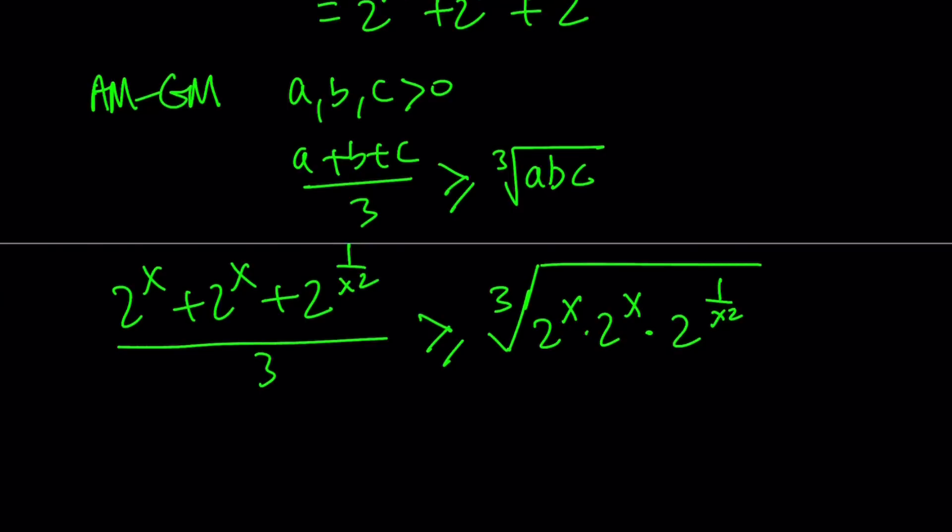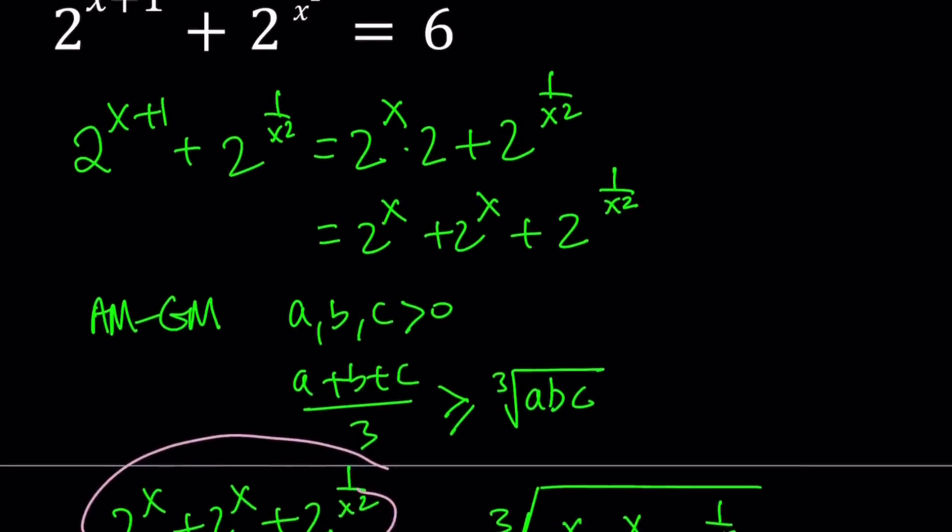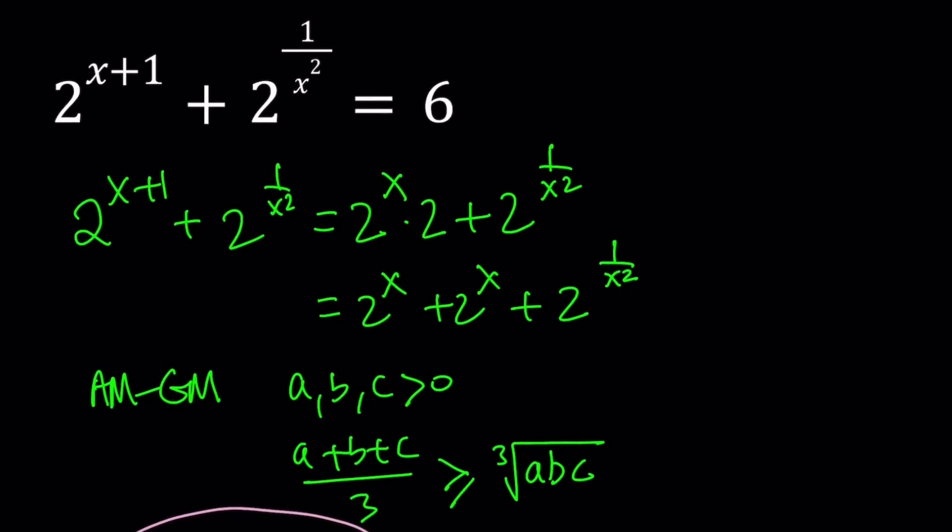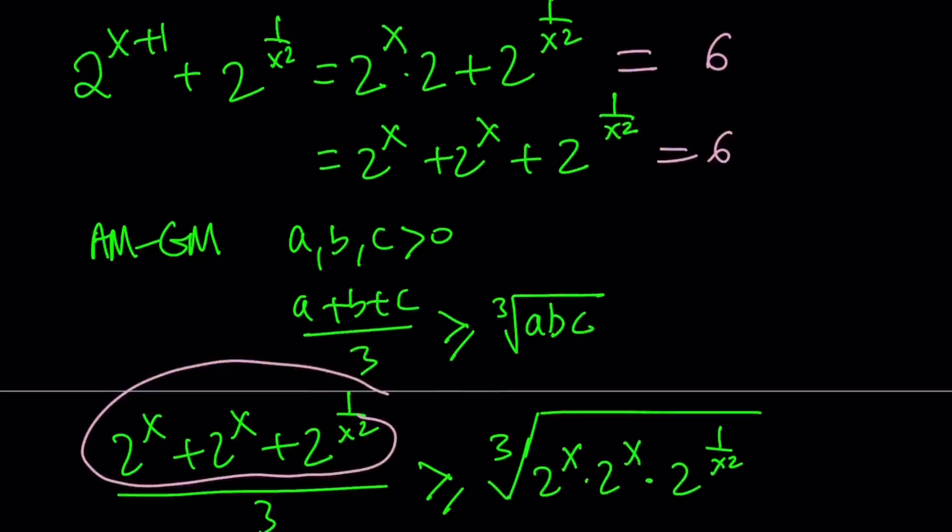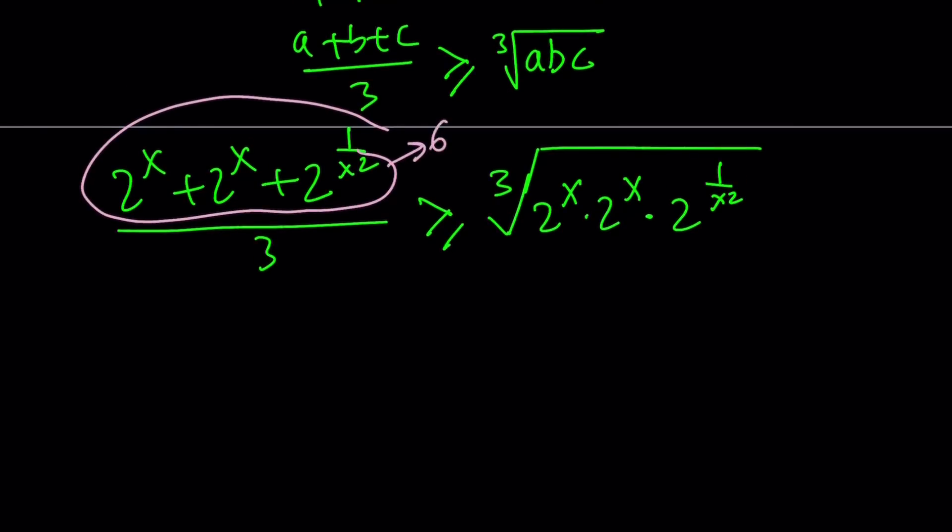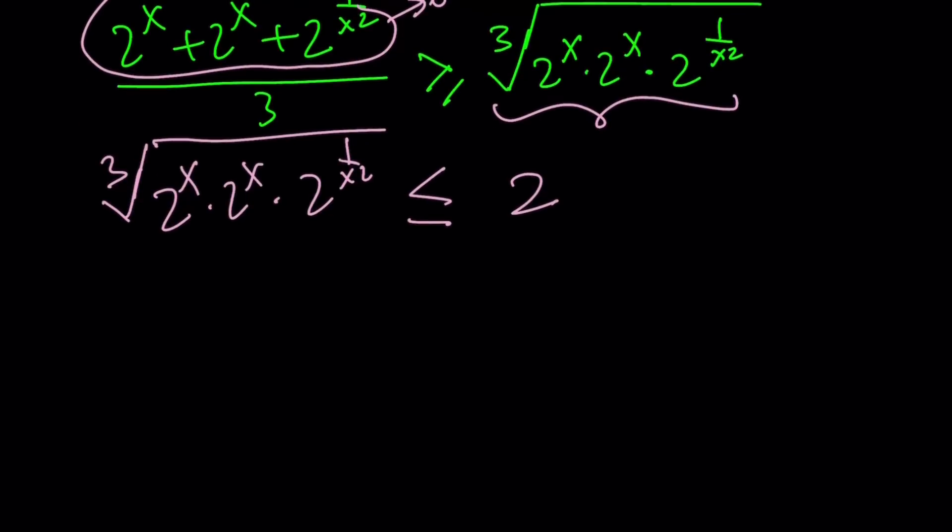Now, we do know the value of the sum, right? Because it comes from here. So this is actually equal to 6. Great. So now we're going to replace that with 6. 6 divided by 3 is 2. So this expression right here, the cube root of 2 to the power x times 2 to the power x times 2 to the power 1 over x squared, is going to be less than or equal to 2, because we switch sides, right? And we can go ahead and cube both sides. 2 to the x times 2 to the x times 2 to the 1 over x squared is less than or equal to 8.